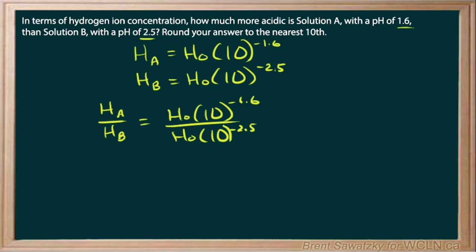So basically the ratio of those, the H₀ terms cancel out, base of 10. Exponent laws tell us negative 1.6 minus negative 2.5, which is the same as saying negative 1.6, and the negative negative makes positive, plus 2.5, which equals 0.9.